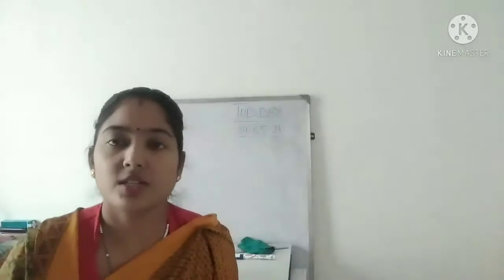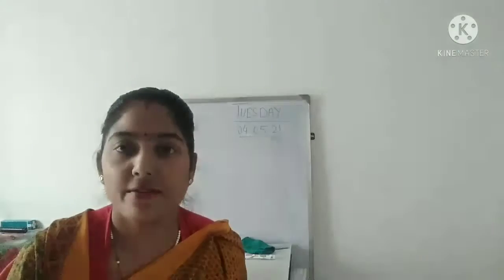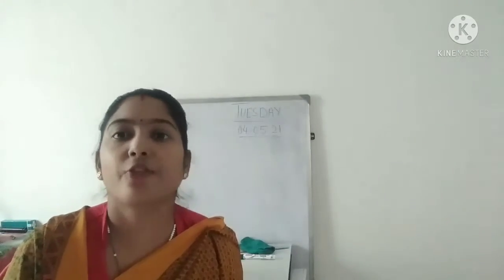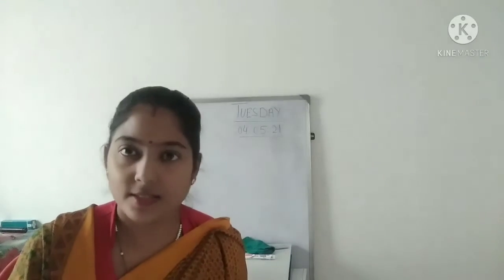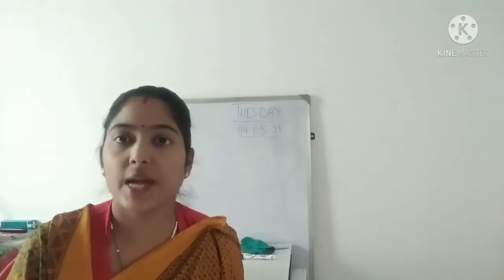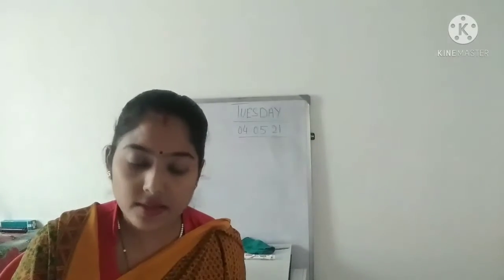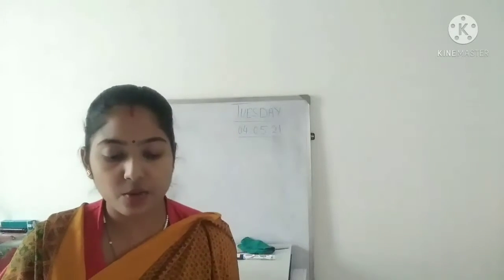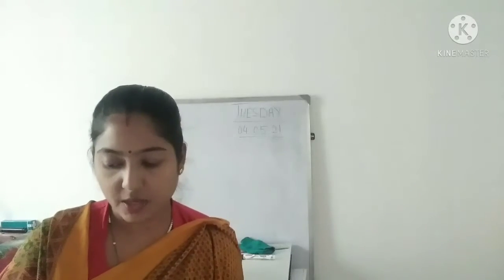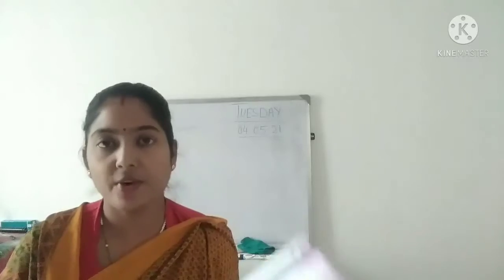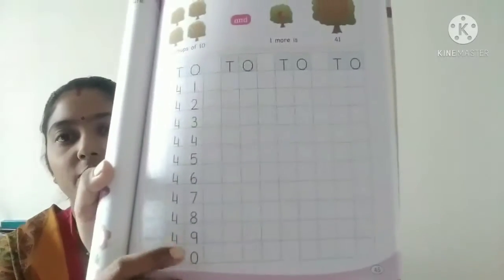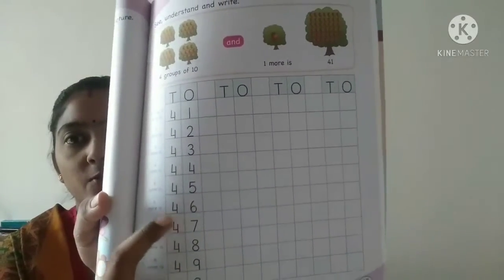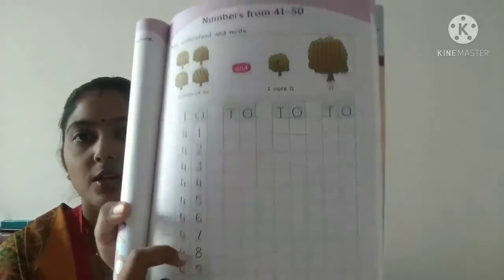Okay children, so yesterday we have learned the number counting from 41 to 50, isn't it? So today we are going to write the numbers in our book. So children, take your Maths book and take out page number 45. Here we will write the numbers from 41 to 50.